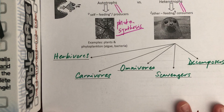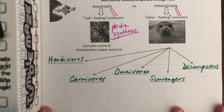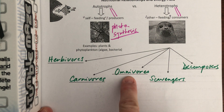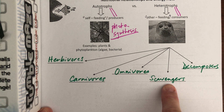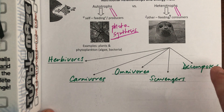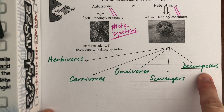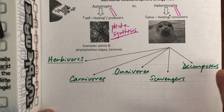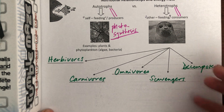Of the heterotrophs, you have a lot of variety: the ones that just eat plants, the ones that eat meat, the ones that eat both plants and meat, the ones that eat dead stuff, and the ones that take stuff that's been dead or leftover pieces — like the horns of a goat. Maybe somebody eats a goat but they don't eat the horns, and the horns eventually get decomposed.